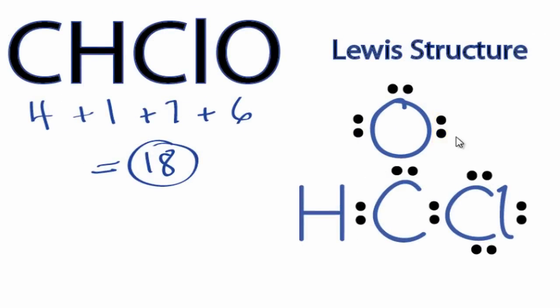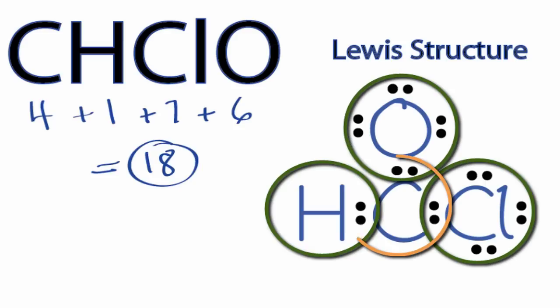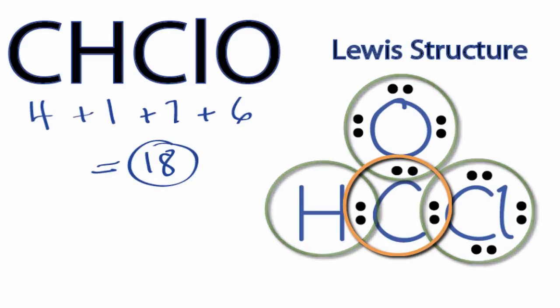Hydrogen has 2 valence electrons, its outer shell is full, and both the oxygen and the chlorine have 8 valence electrons as well. However, the central carbon only has 6 valence electrons.